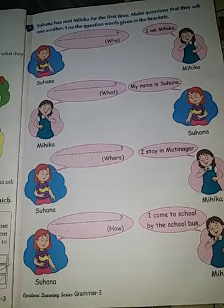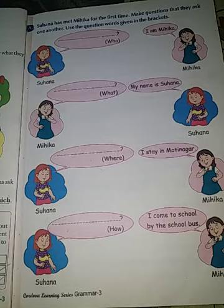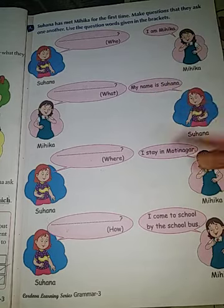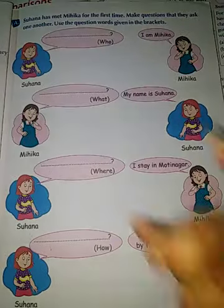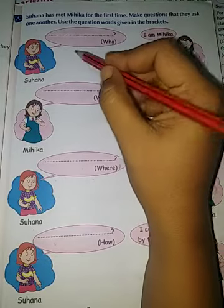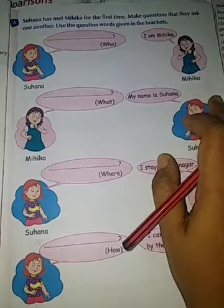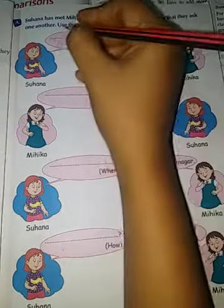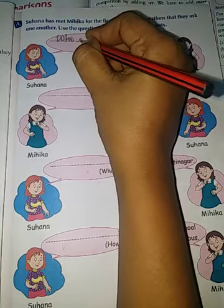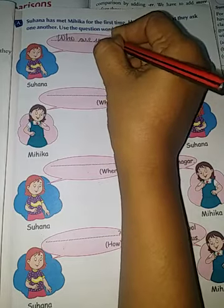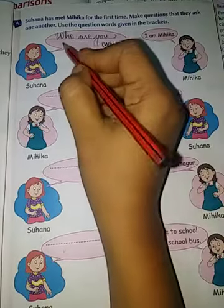Now you have to fill in questions using the hint given in brackets. For the answer 'I am Mihika,' the question using 'who' will be: 'Who are you?' The question mark is already given, and we used the word 'who.'